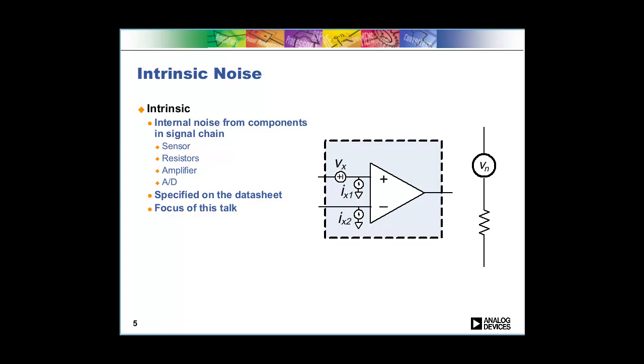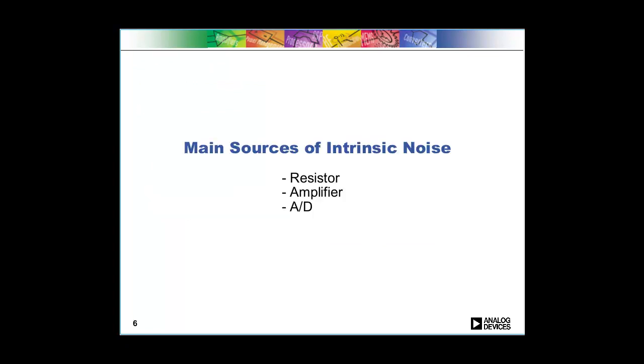Certainly there are other intrinsic noise sources out there, say a reference or a D to A converter. But in the majority of signal chains that we see, it seems like these three types of ICs are the main contributors to noise. So now we're going to go talk about these different contributors to noise.